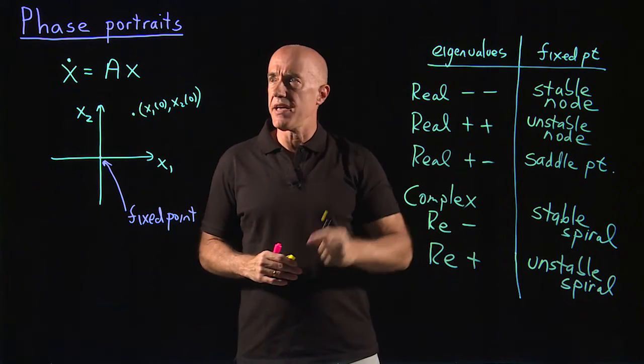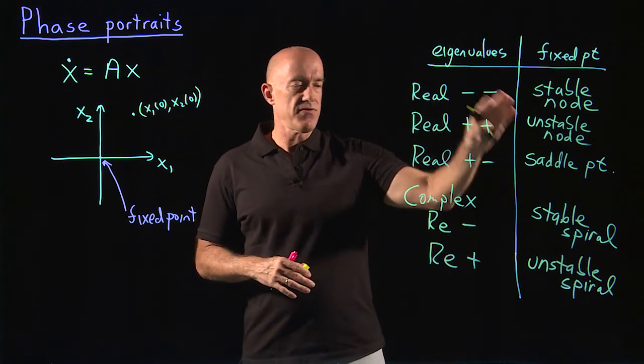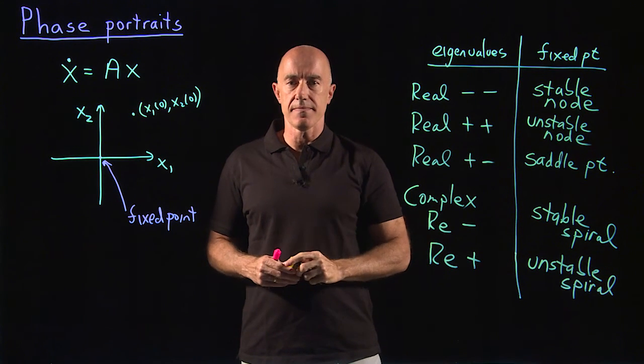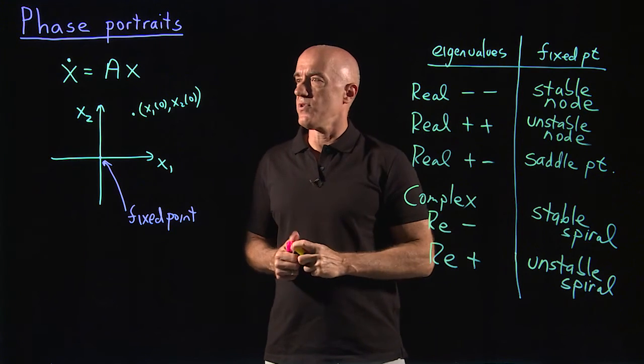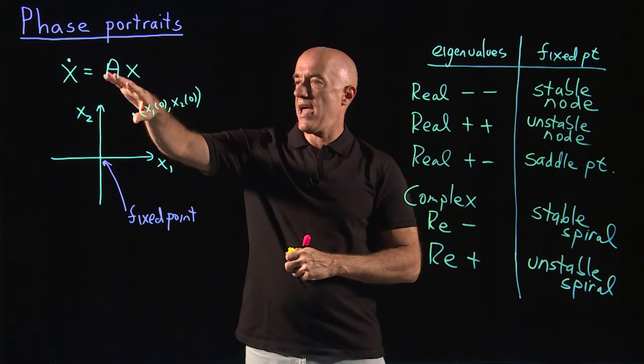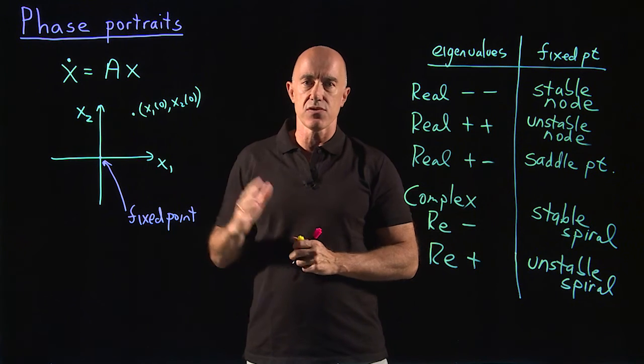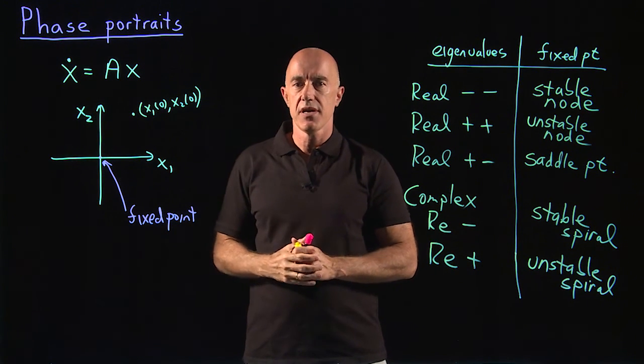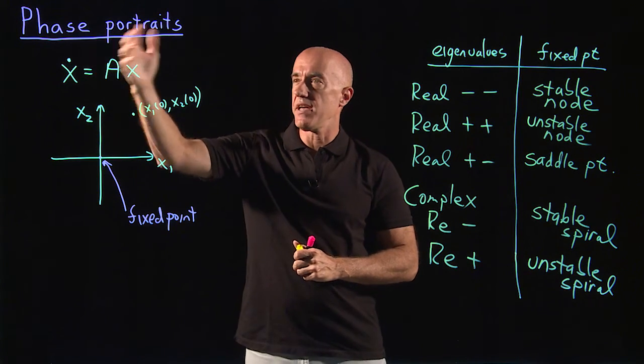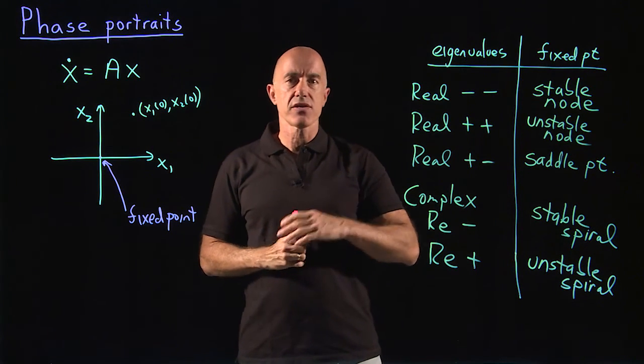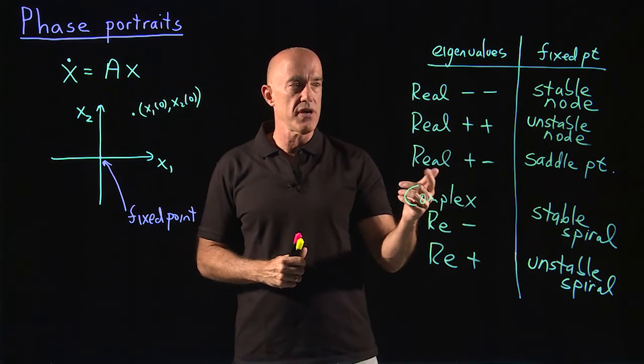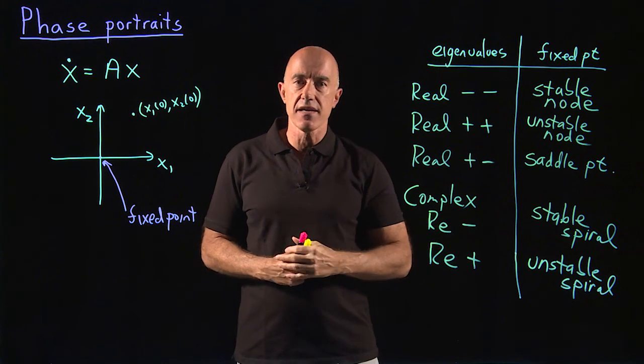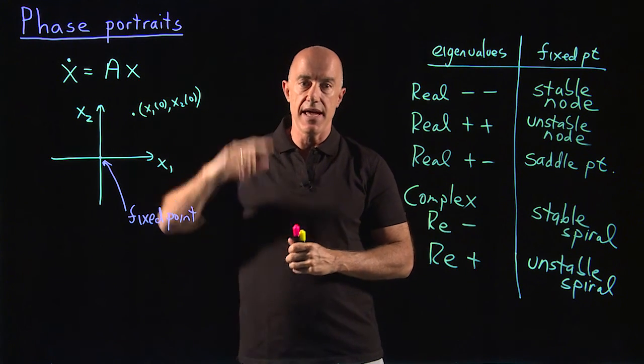And the diagram, the phase portrait, for these different cases will all have a distinctive look for them. So let me review. We're looking for a picture that represents the solution of our system of first order equations. That picture is called a phase portrait. And the character of the picture will depend on the type of eigenvalues that we get from the matrix A.